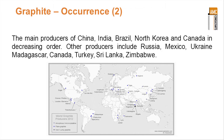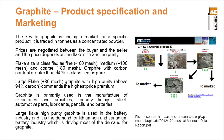It occurs all over the place as well. There's no dots on the map in Australia, but the ASX is littered with companies with graphite projects in Australia and in Africa. There are more projects in Africa than on this map, which shows the producers of graphite in 2012. There are a lot of projects in the pipeline, so the key to graphite is finding a market for a specific product.